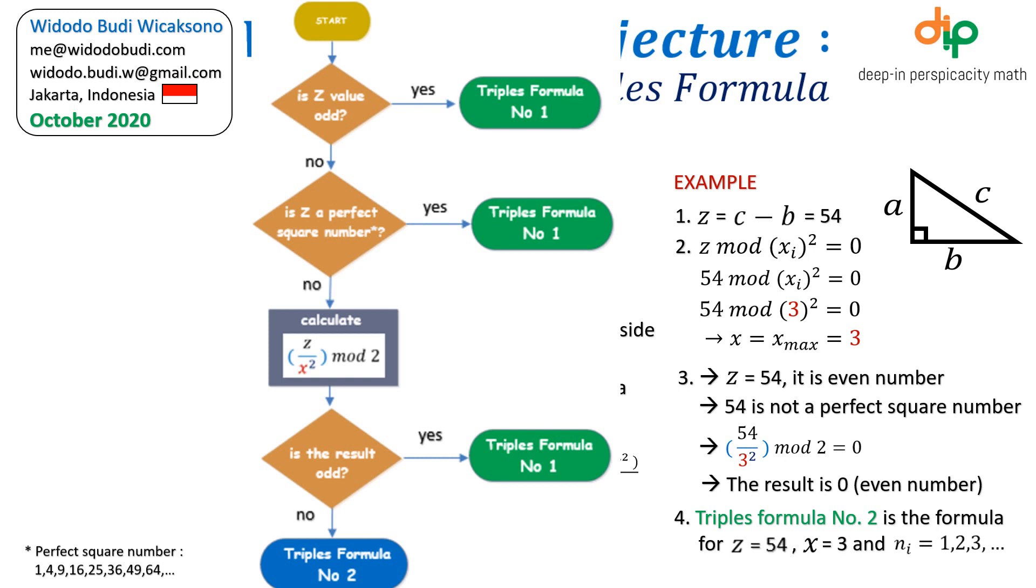Is it an odd number? Is it a perfect squared number? Is it odd or even number after dividing Z index by 2? Z index is Z value divided by specific defined X squared value.